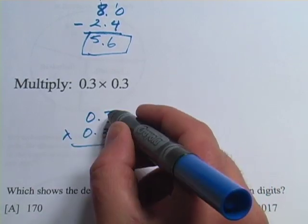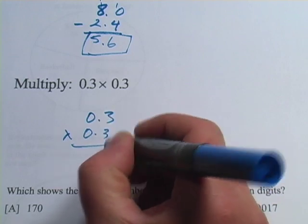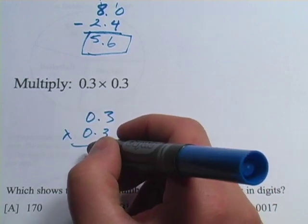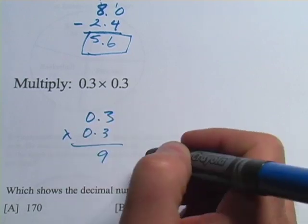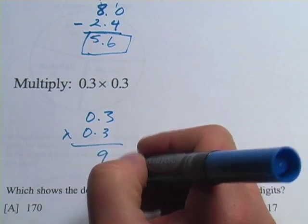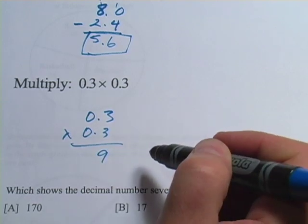And I take this 3 and I multiply by the numbers on top. 3 times 3 is 9, 3 times 0 is going to be 0, that's not going to add anything. This number is 0, that's not going to add anything. So we've got our answer there, we just need to figure out where to put the decimal point.